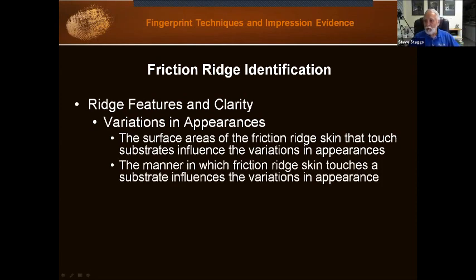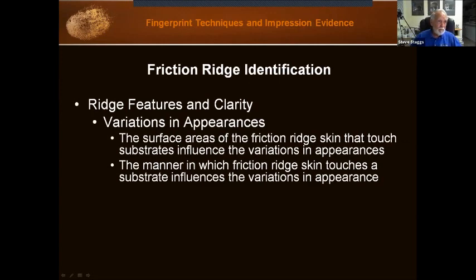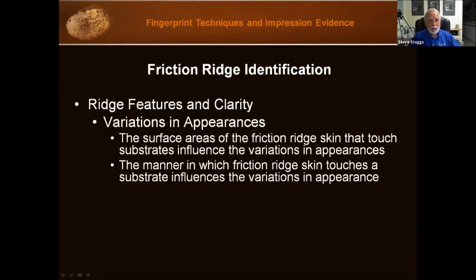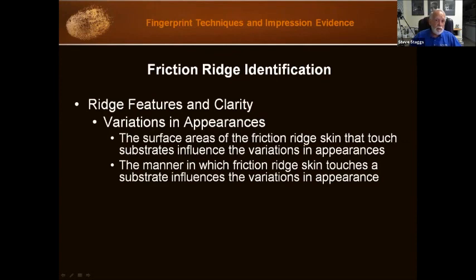The manner in which friction ridge skin touches a substrate also influences the variations in appearance. Flat touching, rolling, sliding, or twisting will influence the skin's pliability, causing distortions. Studying the manners of touching and distortion will aid the examiner in examination of prints. Often when you are getting your training, you will be experimenting with touching surfaces in different manners and seeing the results.